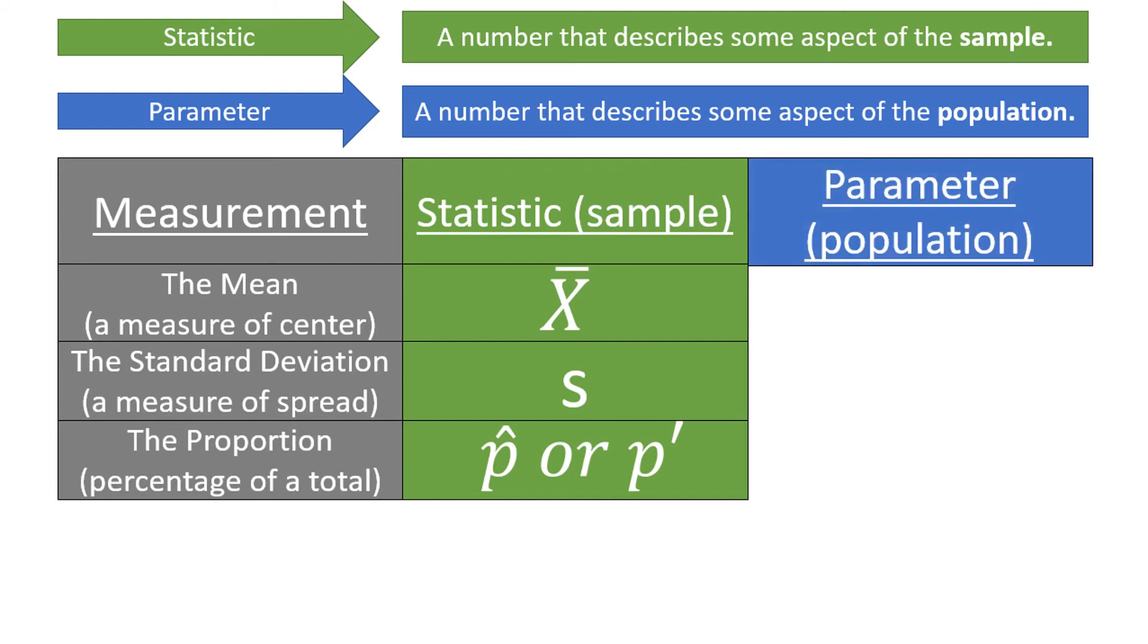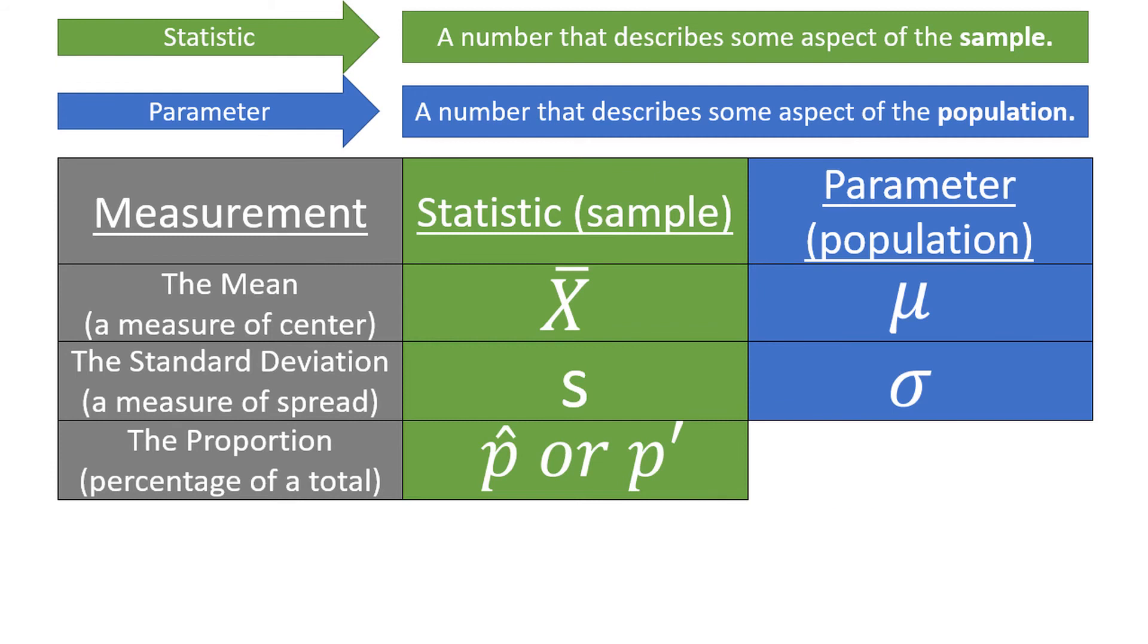Examples of parameters are mu for the mean, sigma for the standard deviation, and p for the proportion. These values all represent numbers relating to the population, which is why they are parameters.